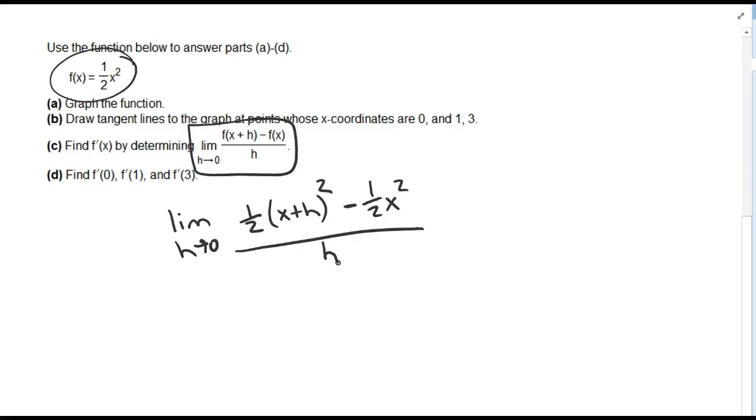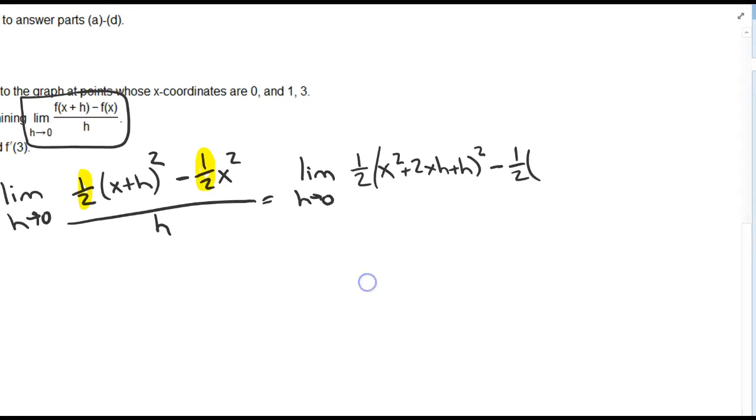So don't get intimidated by the coefficient here. Treat it like any other constant. So I'm going to take the limit as h goes to 0 of the 1 half times x squared plus 2xh plus h squared minus 1 half times x squared.